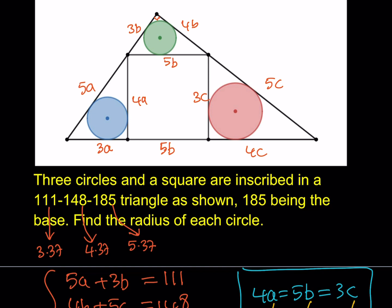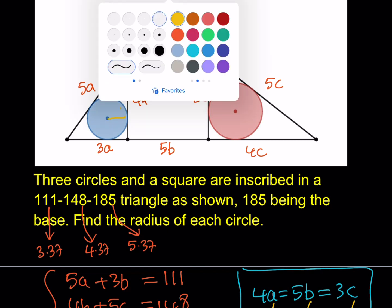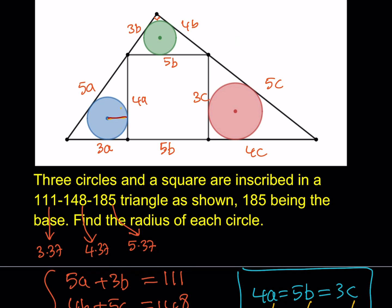I mean, a lot of problems can be solved at the competition level, Olympiad level, with similarity. That's a really good tool. Besides the Pythagorean theorem, of course. But, you know, how does that play out in our problem? So, this is what I'd like to say. We need to find the radius of each circle.